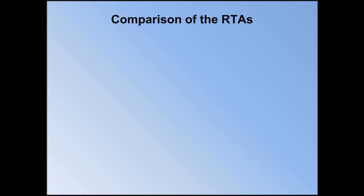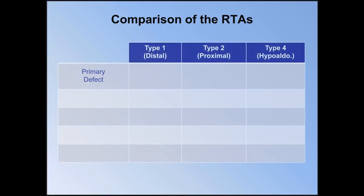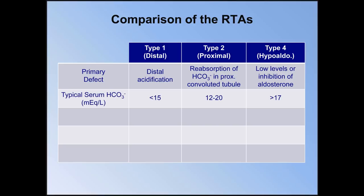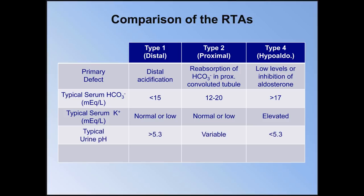I'm going to briefly go over a comparison of the three RTAs so that you are able to distinguish them based on some common lab tests — these cutoffs are just general guidelines. Remember that the primary defect with type 1 is distal acidification, with type 2 is reabsorption of bicarb in the proximal tubule, and with type 4 it is hypoaldosteronism. The serum bicarb levels vary such that the lowest levels are seen with type 1 and the highest with type 4. The serum potassium is normal or low with both types 1 and 2, but almost always elevated with type 4.